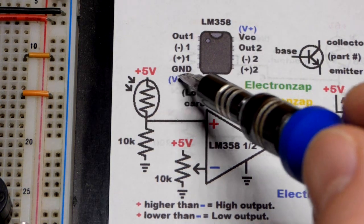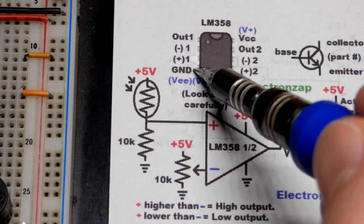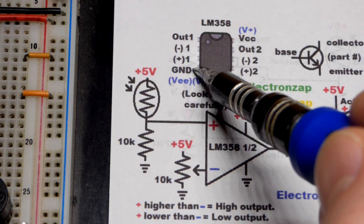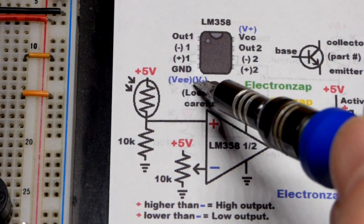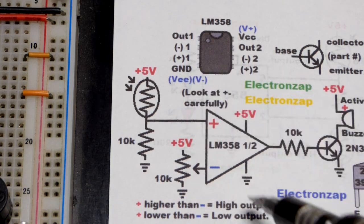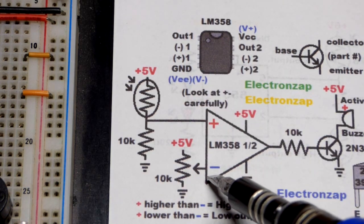You have to power it. So pin 8 positive supply and pin 4 the negative supply. It's a single supply op amp. You can just have positive and negative which is ground. Or you could have a negative voltage in relationship to ground where ground is a middle point.